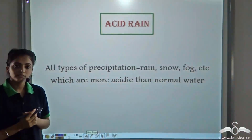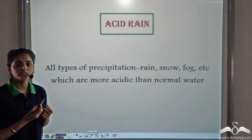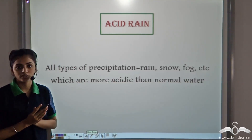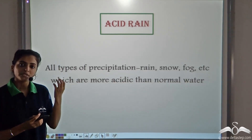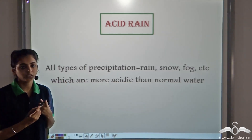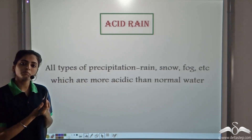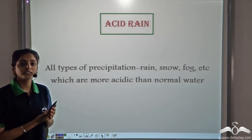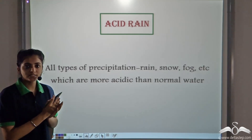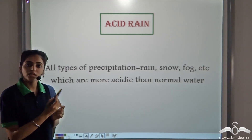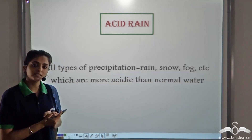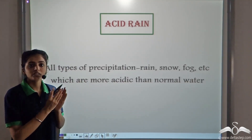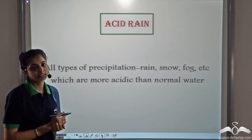Acid rain is a form of precipitation — like rain, fog, snow, and so on — which is more acidic than normal water. The oxides of sulphur and nitrogen combine with water vapour present in air, and when it precipitates, it contains these acids. This form of precipitation we call acid rain.